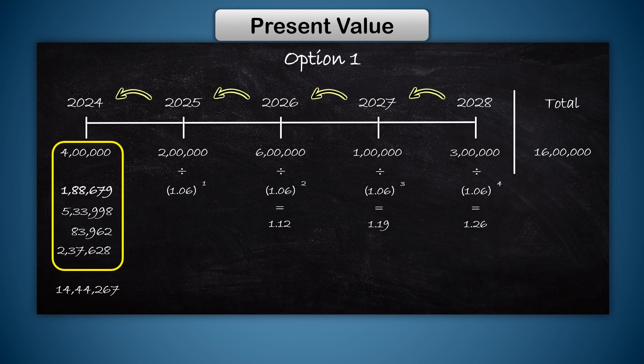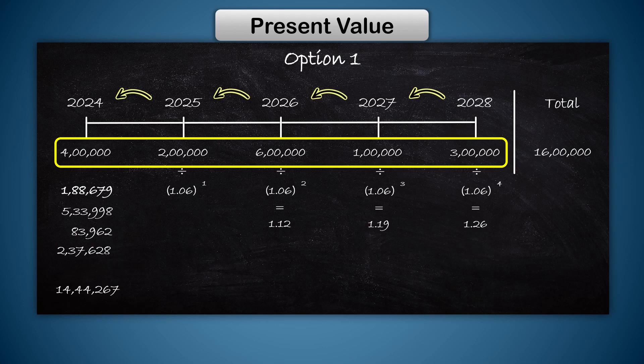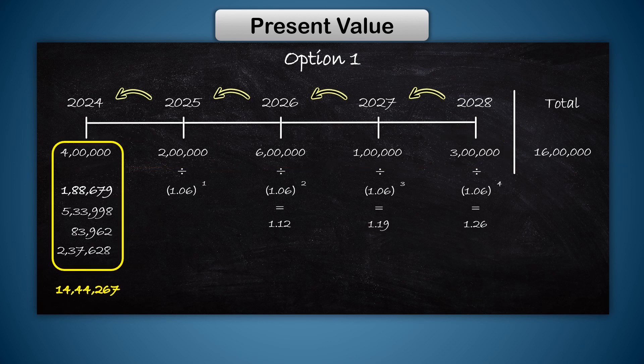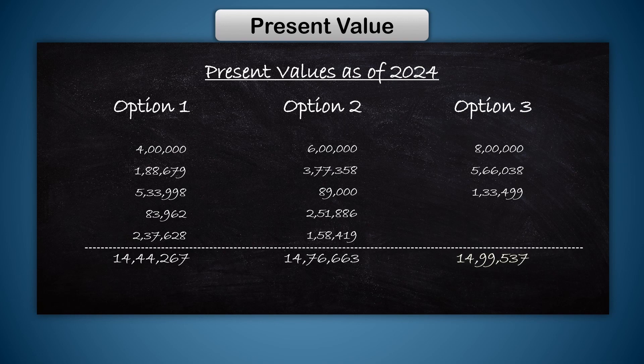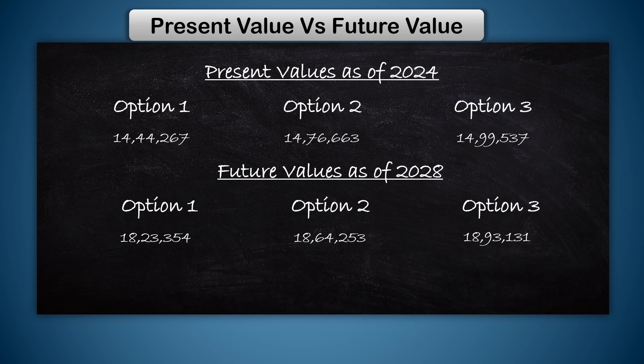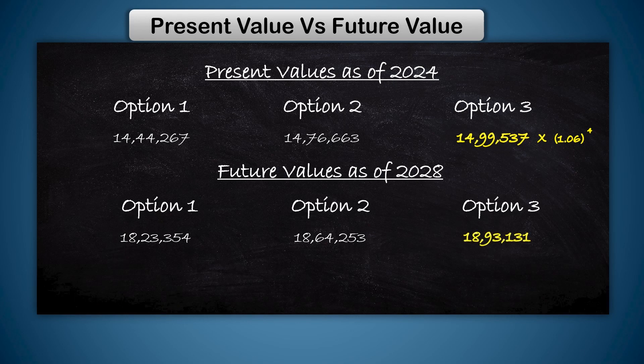This is the present value of all amounts as on today. So getting this cash flow pattern is equivalent to getting 14 lakh 44,267 right away. Doing the same calculation for the other options gives these results. Option 3 once again turns out to be better. Whether you take future value or present value approach, you get the same result. This is the worth in 2024, and this is the worth in 2028, and they neatly match up with each other.